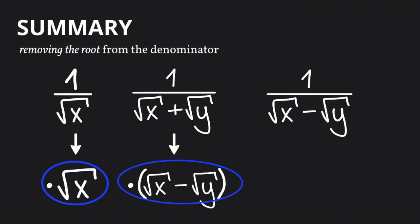In our second case, when a number and a square root are added, or two square roots are added to each other, we have to invert the sign. We multiply both the top and the bottom by the denominator with the inverted sign.